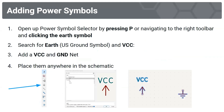First, we're going to add power symbols. Open up the power symbol selector by pressing P, or navigate to the right toolbar and click the IRF symbol. Search for IRF, which is a US ground symbol, and also VCC. Add both of those nets to your schematic. You can place them anywhere in the schematic for now.